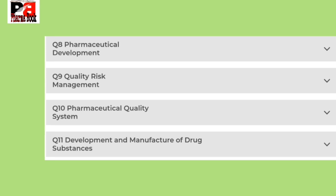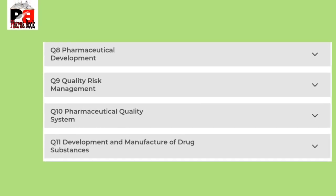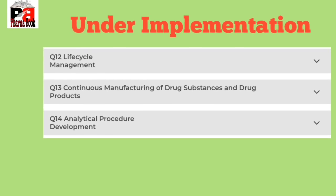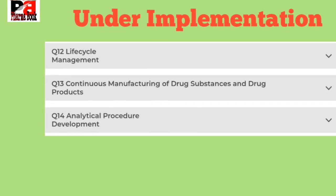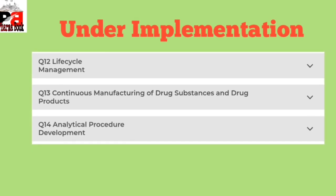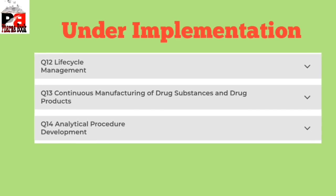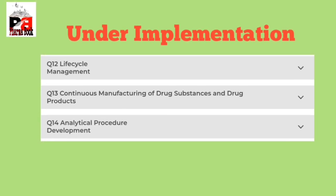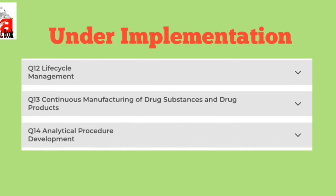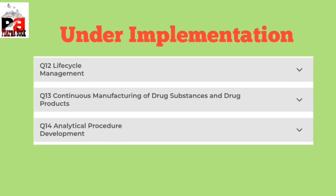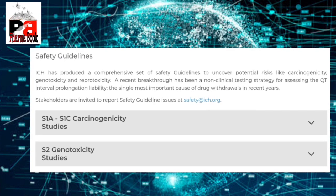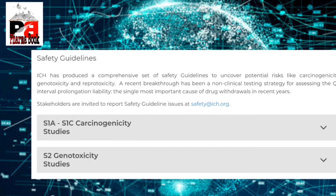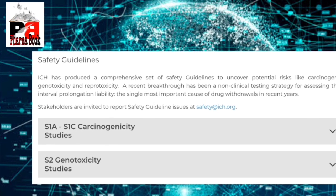Continuing the quality guidelines: Q11 Development and Manufacture of Drug Substances. Q12, Q13, and Q14 are currently under implementation. Q12 is Lifecycle Management, Q13 is Continuous Manufacturing of Drug Substance and Drug Products, and Q14 is Analytical Procedure Development.